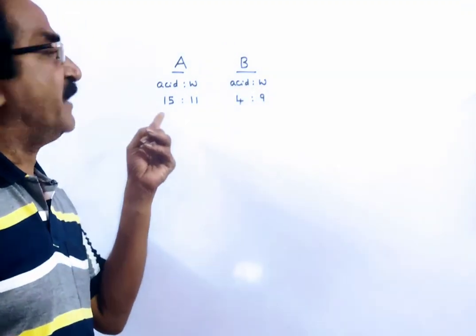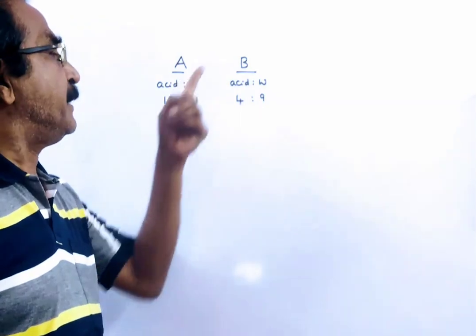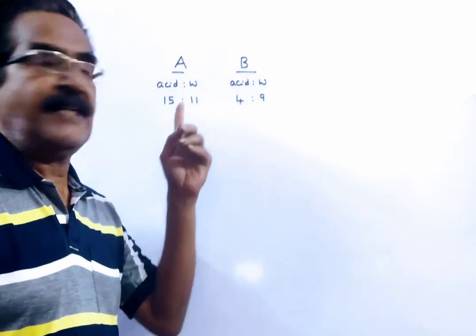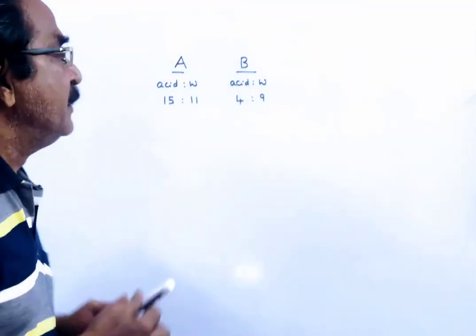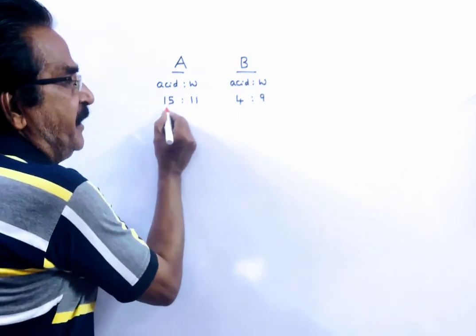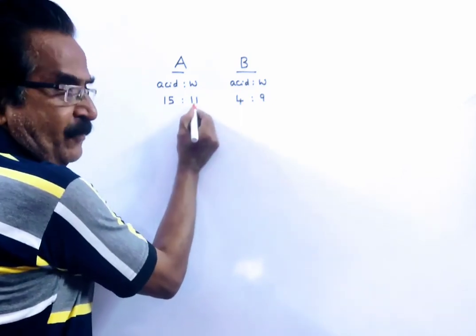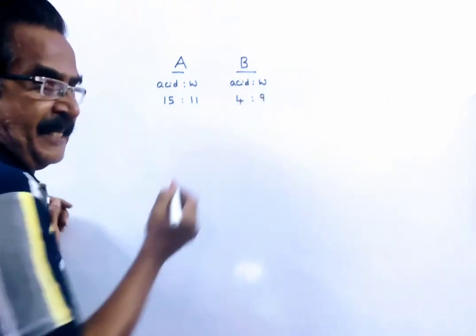The ratio of acid and water in two solutions A and B are 15 to 11 and 4 to 9 respectively. See, this is 15 to 11, 15 plus 11 is 26. This is 4 plus 9, 13.